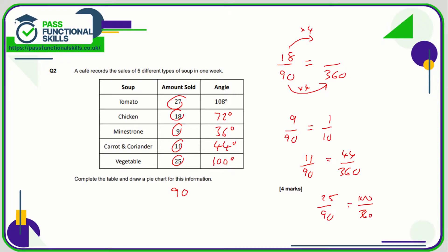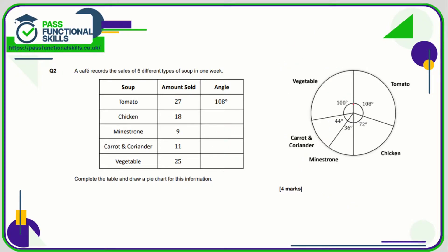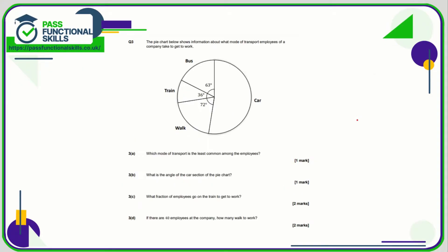If you want to double check, add up all the angles and you'll see they add up to 360. Then, using a protractor, measure out all the angles and your pie chart should look something like that. Question number three: which mode of transport is the least common? That's the smallest slice — the train, with 36 degrees.